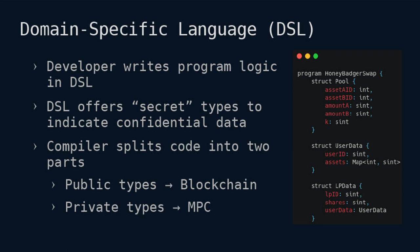So coming back to the three things: the language, the compiler, and the virtual machine. Why do we need a domain-specific language? Basically we want the developer to be able to write his applications without knowing anything about MPC. But some code has to be run in the MPC and the other part has to be run on the blockchain, so the compiler should figure out how this is separated. The developer only has to put secret types or clear types, and the compiler figures out how it is separated and compiles it for EVM or for the MPC VM.